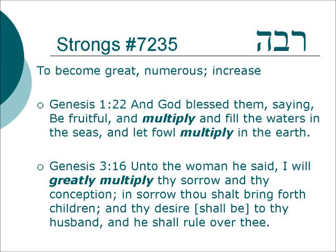Another root which comes from this two-letter root Reshbet is Rava, which means to become great, numerous, or increase. Genesis 1:22 — And God blessed them, saying, Be fruitful and multiply, and fill the waters in the seas, and let the fowl multiply in the earth. A very important commandment: Prove uravu — be fruitful and multiply. Genesis 3:16 — And unto the woman he said, I will greatly multiply thy sorrow and thy conception. In sorrow thou shalt bring forth children, and thy desire shall be to thy husband, and he shall rule over thee.